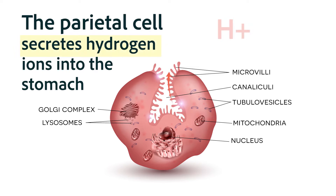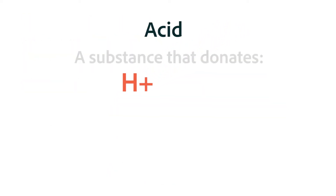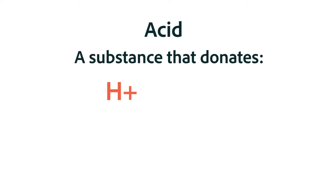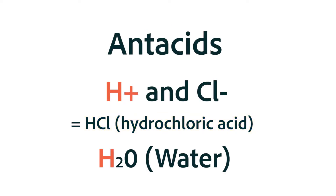The important secretion with respect to antacids is acid. The parietal cell pumps out protons — hydrogen ions — directly into the stomach. The definition of an acid is a substance that donates, or gives up, a hydrogen ion. The hydrogen ions combine with the chloride anion in the gut to form hydrochloric acid. As a broad overview, antacids are medications that simply neutralize the acid in the stomach — they allow the hydrogen ion to be made into water.